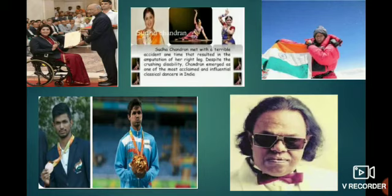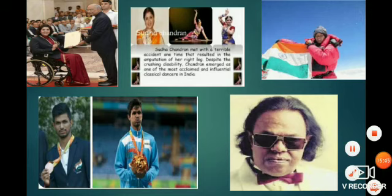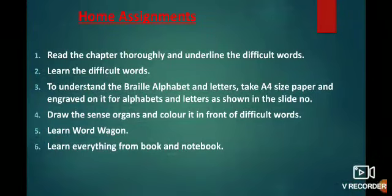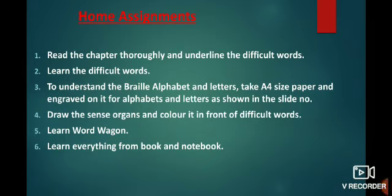Now it is time for some homework. I think you all have understood this chapter. If you have any problem, you can ask — just go through the video, read the chapter very carefully and ask your query. Read the chapter thoroughly and underline the difficult words. Learn the difficult words. To understand the Braille alphabet, take A4 size paper and engrave on it the alphabets and letters as shown in the slide. Draw the sense organs and color them. Learn the word wagon and learn everything from the book and notebook.